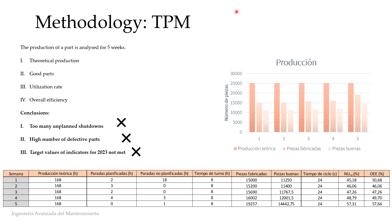The total productive maintenance methodology was chosen to analyze this process because it is important to have good interdepartmental management during the injection parameters adjustment stage and mold modifications. For example, the design engineering or development department has to know what changes have to be made to the part if it is defective. The project managers have to be aware of the duration of the modifications to be able to modify delivery deadlines. Maintenance has to be very aware of all the phases so that the machine does not fail and deadlines are not delayed. It is important that there is good coordination between them and that the project milestones are met.